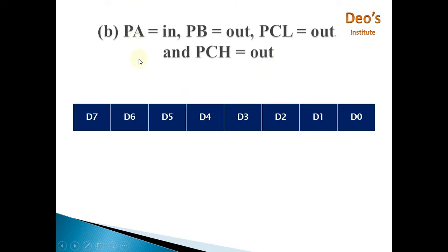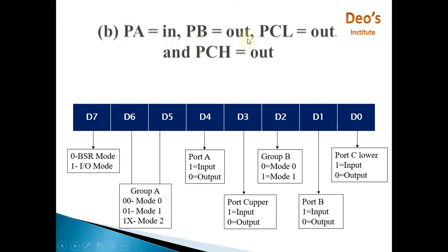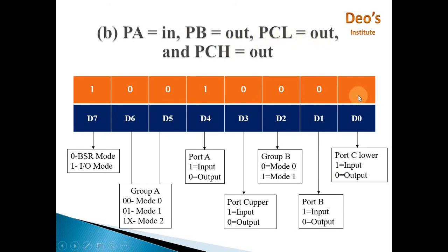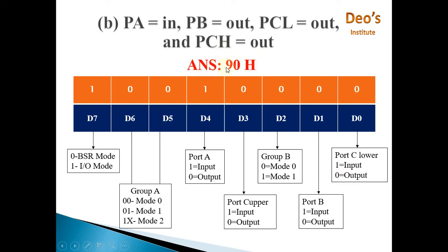Next sub-problem: port A as input port, port B as output, port C lower as output, port C higher as output. Again D7 is set to one because it is I/O mode. Group A is in mode 0 because it is simple I/O mode — when mode is not specified, it is simple I/O mode. Port A is input so D4 is one. Port C upper is output so D3 is zero. Group B is mode 0, port B is output so D1 is zero, and port C lower is output so D0 is zero. The final answer is 0x90.